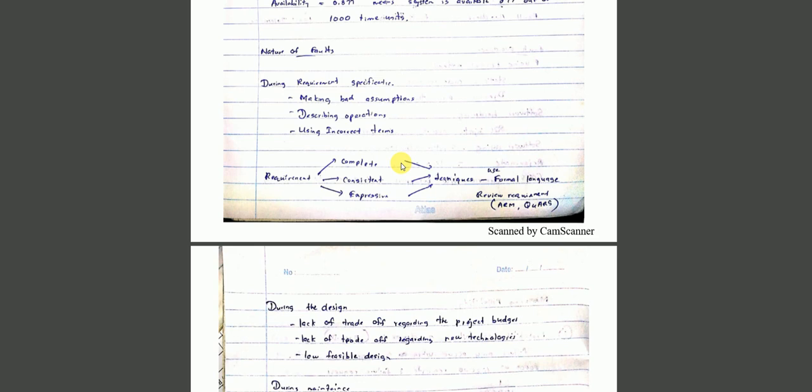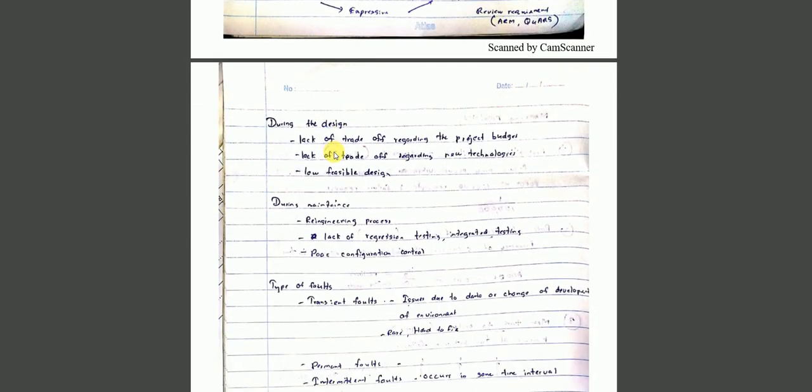During requirements, we need to ensure completeness and consistency. We can use requirement reviews and formal language techniques. During design, we consider the project budget and available technology for feasible design. Maintenance involves re-engineering when needed.